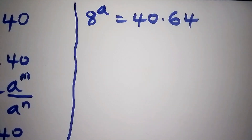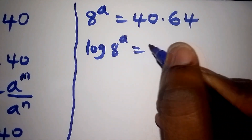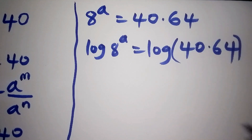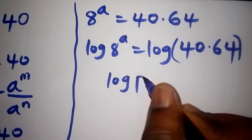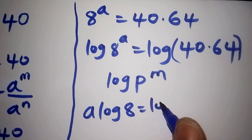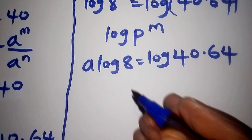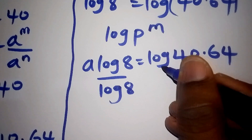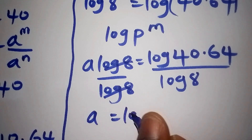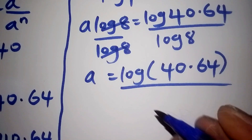Next we shall introduce the log on both sides. So we shall have the log of 8 to the power of A equals the log of 40 multiplied by 64. Assuming that log of B to the power of M equals M times log of B, we get A times log of 8 equals log of 40 multiplied by 64. Dividing both sides by log of 8, log 8 and log 8 cancel, so A equals log(40×64) all over log 8.